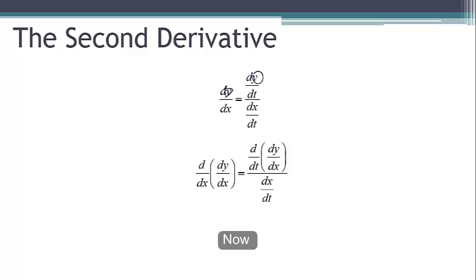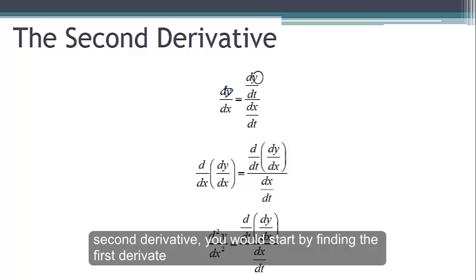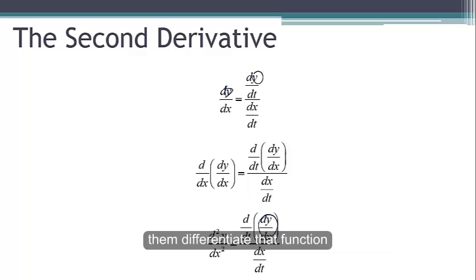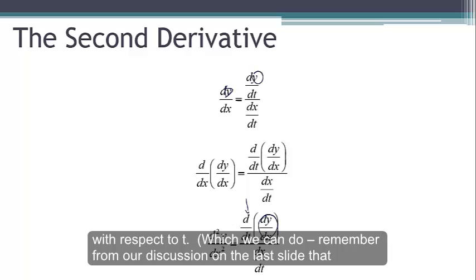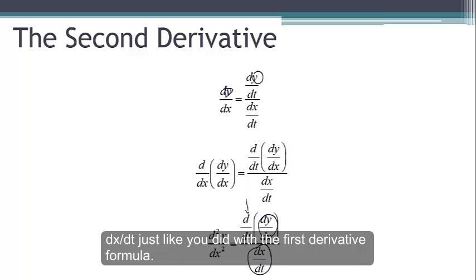Now that might look a little confusing, so let's take a minute and think about what it's saying. To find the second derivative, you would start by finding the first derivative, then differentiate that function with respect to t, which we can do. Remember from our discussion on the last slide that our dy/dx formula gives us a function of t, and finally divide that by dx/dt, just like you did with the first derivative formula.